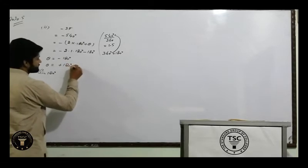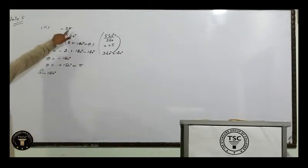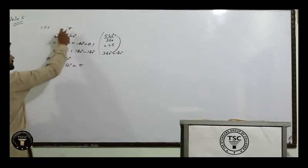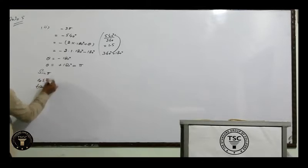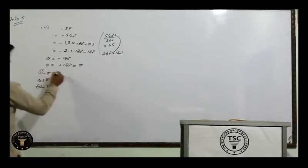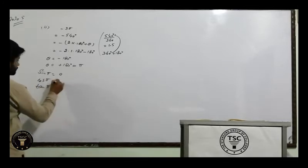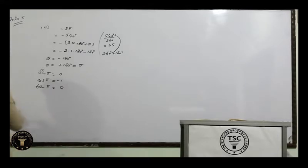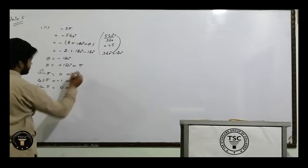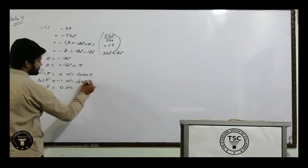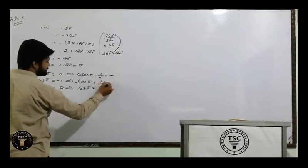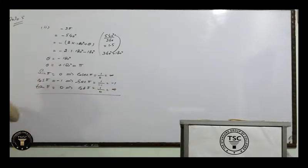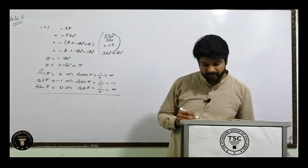Ek baat aur — aap angle π mein bhi likh sakte ho. Chunke question radian mein hai, answer bhi same tarah likhein. So: sin π = sin 180° = 0; cos π = cos 180° = −1; tan π = tan 180° = 0. Reciprocals: cosecant π = 1/0 = undefined; secant π = 1/(−1) = −1; cotangent π = 1/0 = undefined. Question complete.